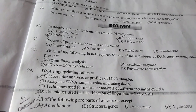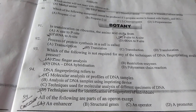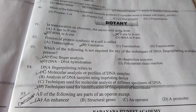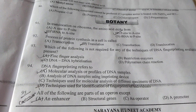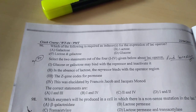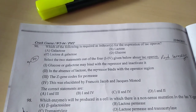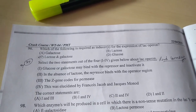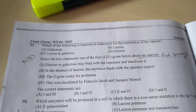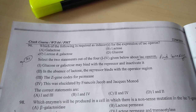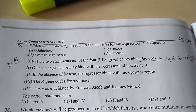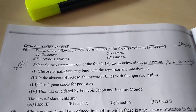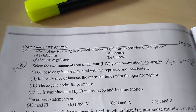Question number 95: All of the following are parts of operon except — and the correct answer is A. Now take some time to read and understand all the options. Question number 96: Which of the following is required as inducer for the expression of lac operon? The answer is B — lactose.